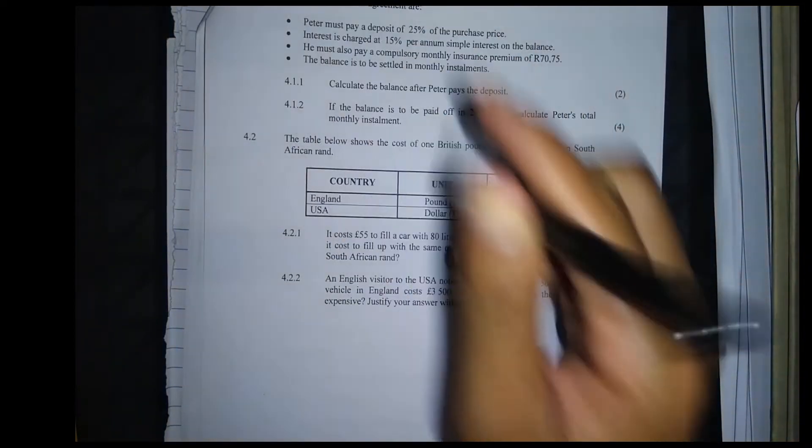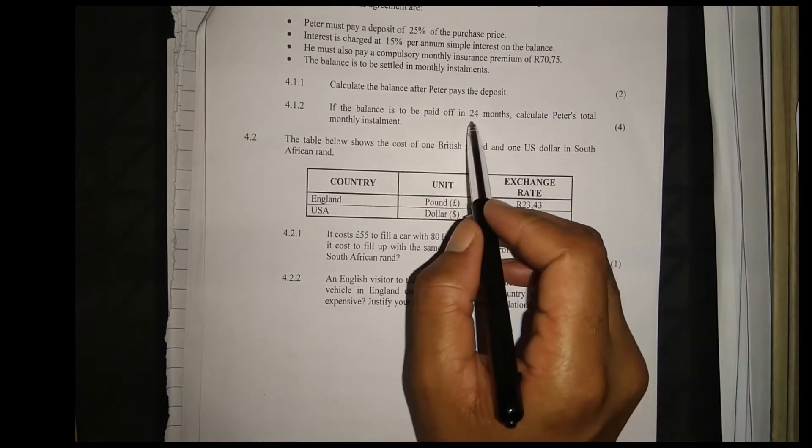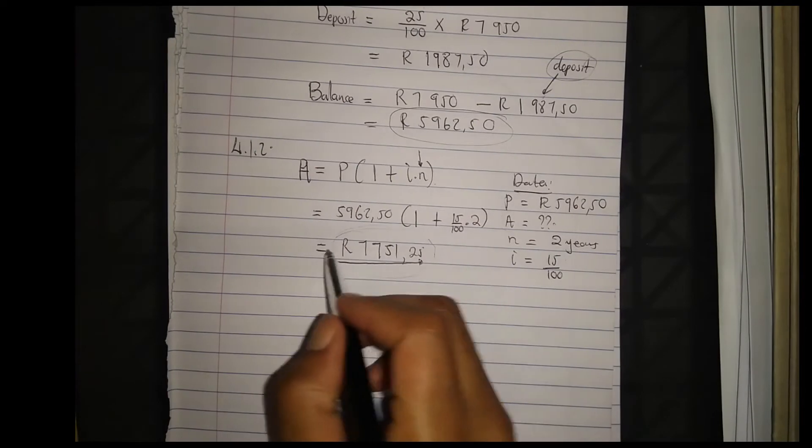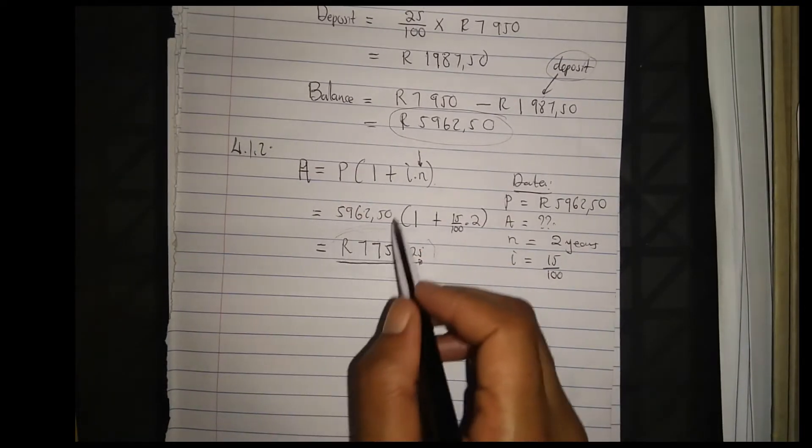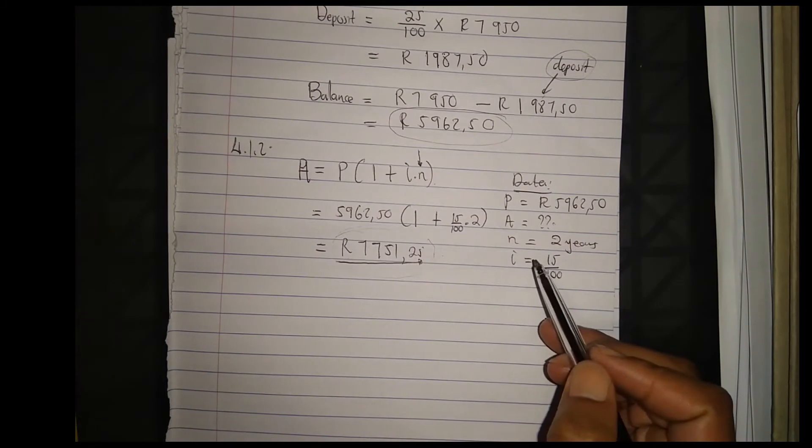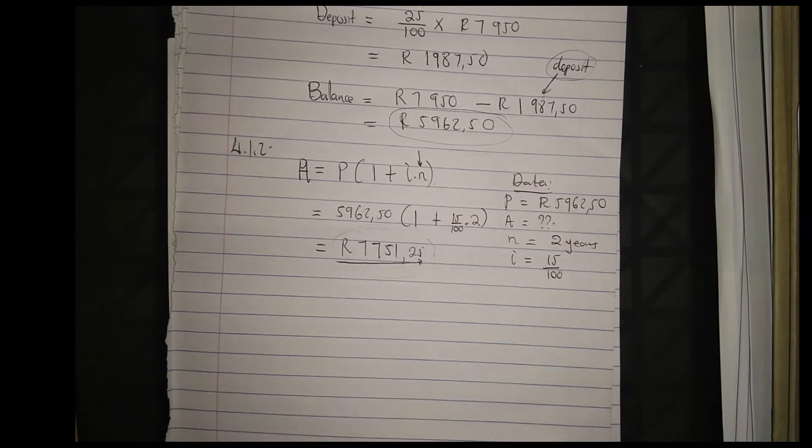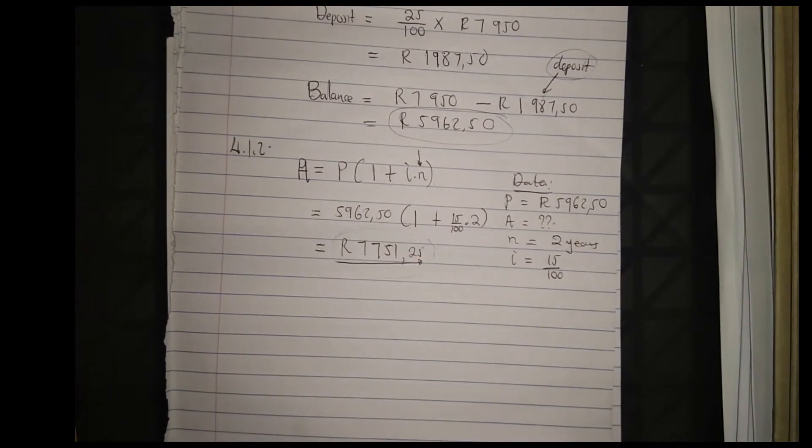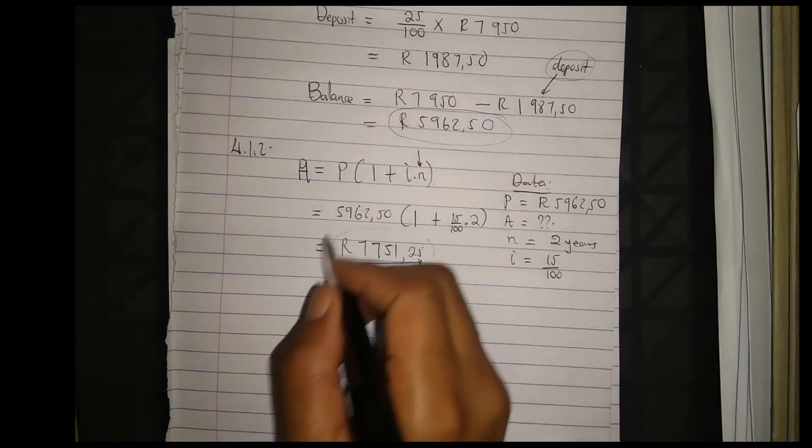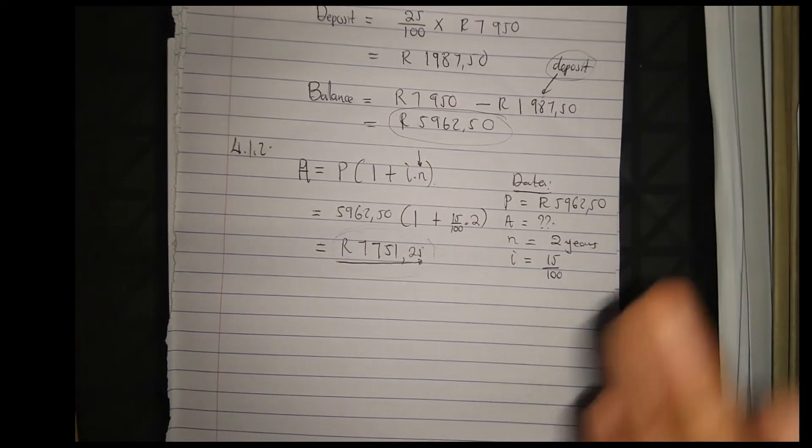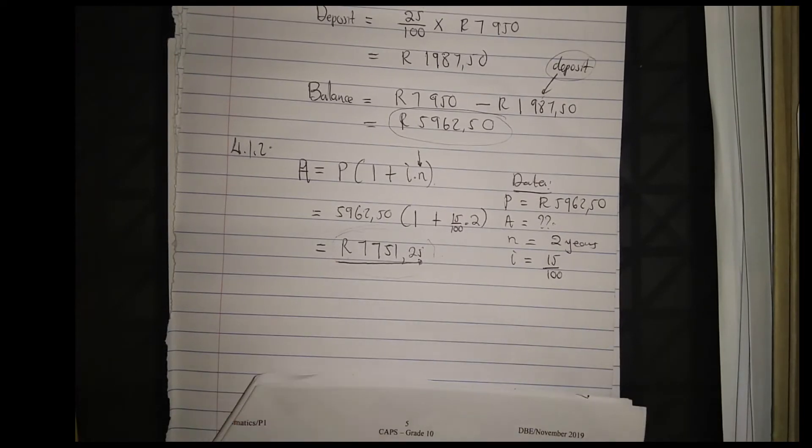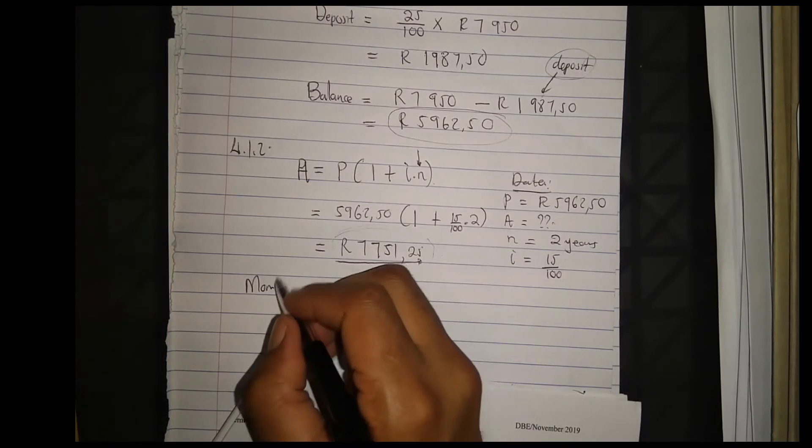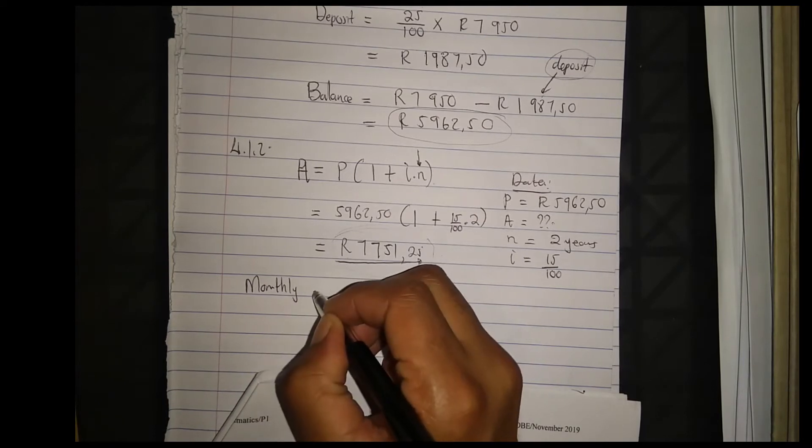If the balance is to be paid off in 24 months, calculate Peter's total monthly installment. The total amount, which is the principal amount plus the interest, will be paid monthly. This amount is divided over 24 months, so every month you pay a certain amount to pay off the loan.